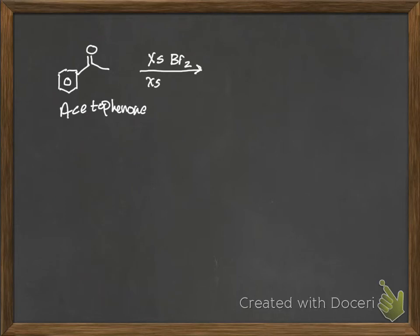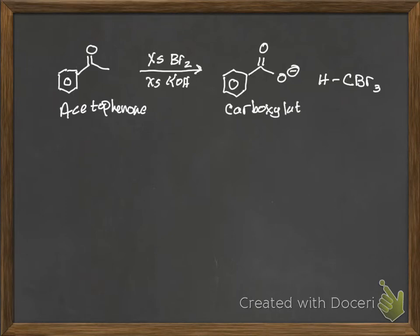All right, so let's do this one. Here we go. Acetaphenone. When we react this with excess Br2 and excess KOH, sorry I had those in the wrong order but it doesn't really matter, they go in at once. Here's what you get: the carboxylate and bromoform.